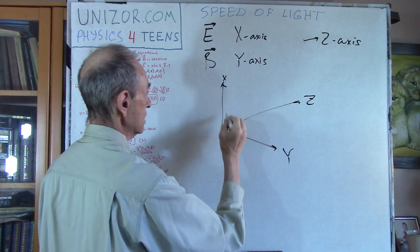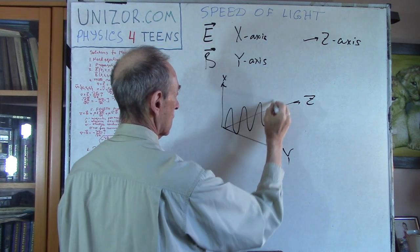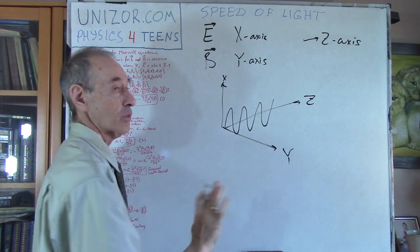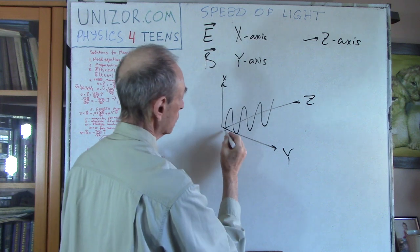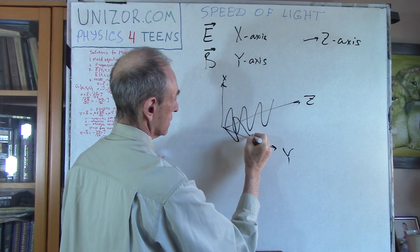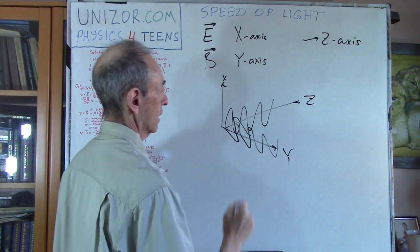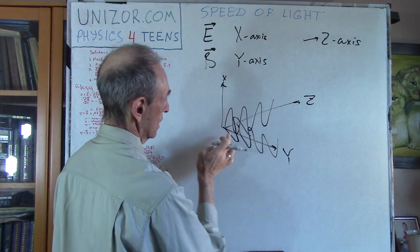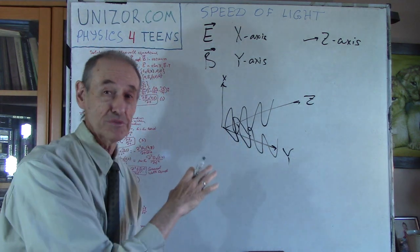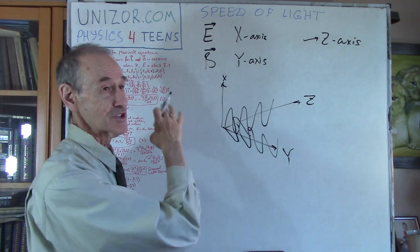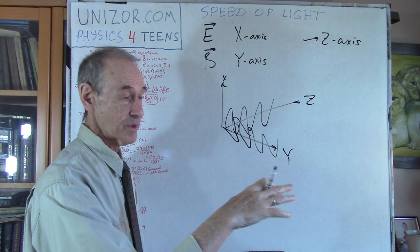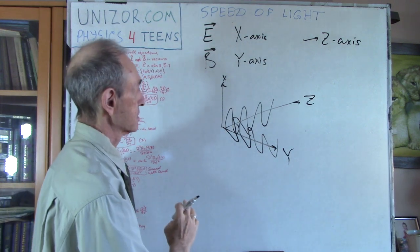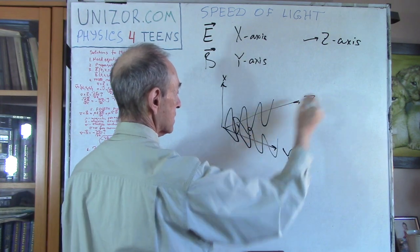Let me draw this: this is my x-axis, this is y, and this is z — the direction of propagation. E is along x, something like a sinusoidal, and only the x component changes; y and z components of the field are not changing. B is along the y-axis — perpendicular to E. There is a much better picture in the notes for this lecture on the Unisor website.